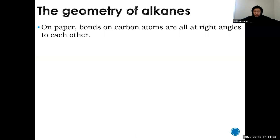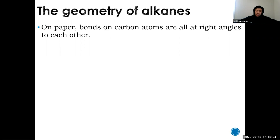So you can make an alkyl group by removing a hydrogen — methyl, ethyl, propyl, butyl, and so on. Now, what do these molecules look like? We learned about VSEPR and Lewis diagrams, so we can draw them in 2D and 3D. If you draw them on paper as a Lewis diagram, it's 90 degrees, but we know that's not true. Take methane: the VSEPR diagram shows a bond angle of 109.5 degrees, which is the most accurate representation.